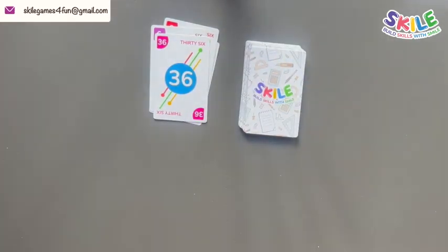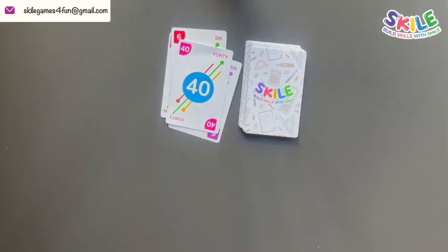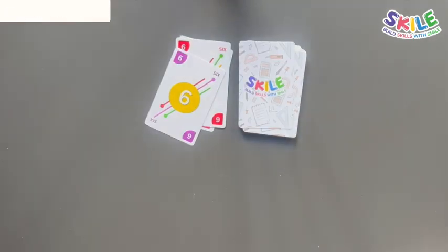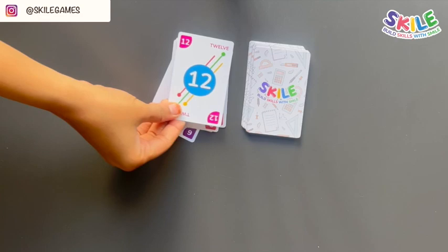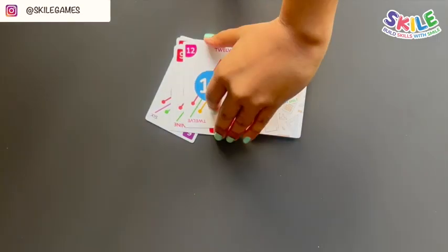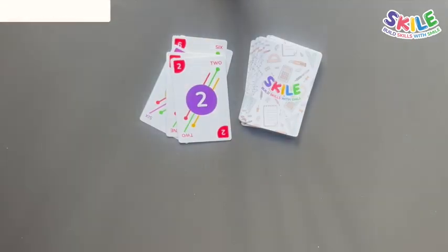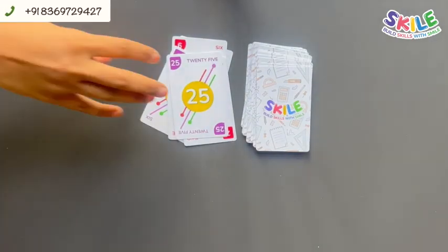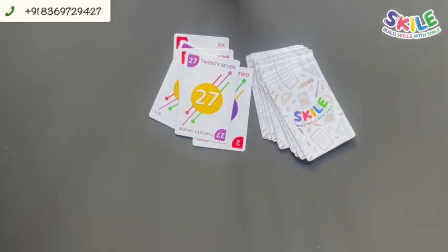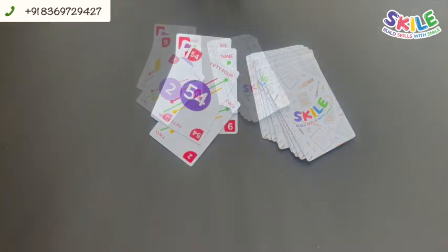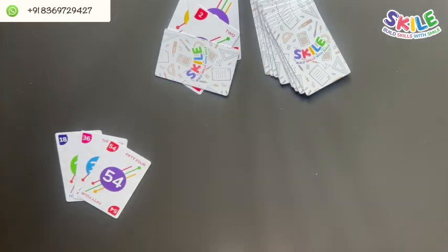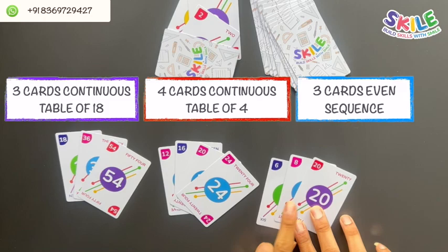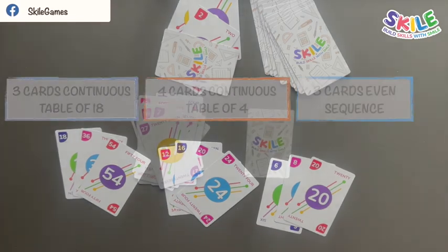The game continues in similar fashion until any player is successful in building up all 3 sequences. When a player is done building all 3 sequences, he discards the last card by putting it face down on the discarded cards pile when it is his turn. At the end, the winner displays all the sequences created by him.